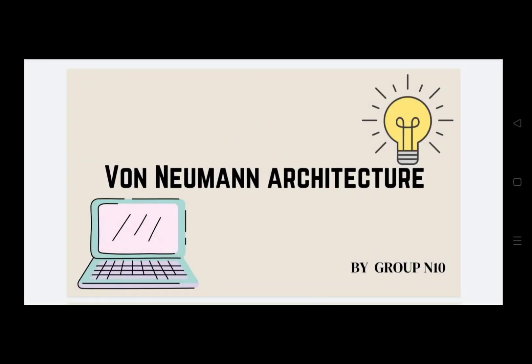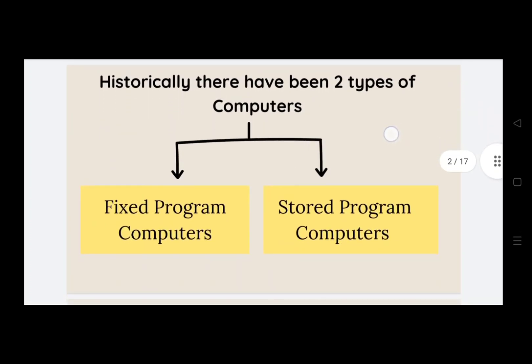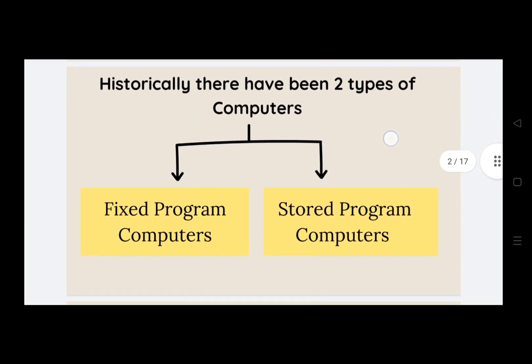Welcome, dear friends. We are group 10 and we are going to explain the Von Neumann architecture in this video. So let's start. First of all, historically there have been two types of computers: fixed program computers and stored program computers.